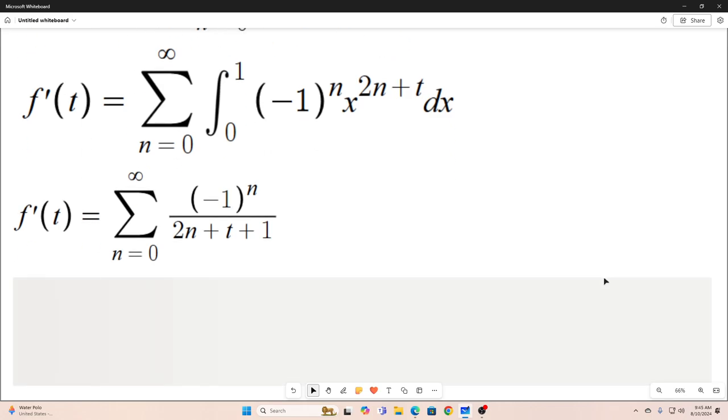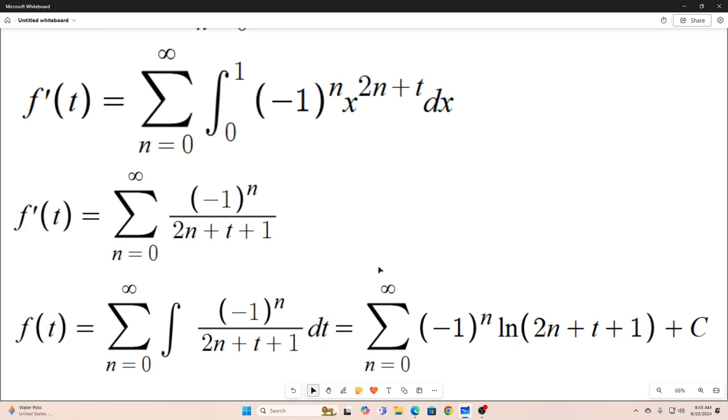But, all right, well, we were not interested in f prime of t. We wanted f of t. So, what we do is we anti-differentiate this sum with respect to t term by term. That's right here. This is basically f of t is equal to the sum of the anti-derivative with respect to t term by term.